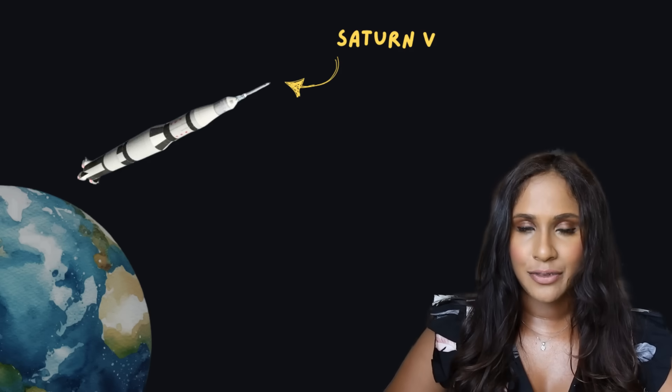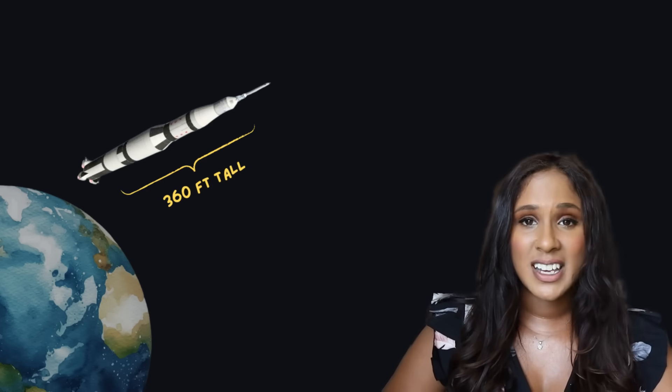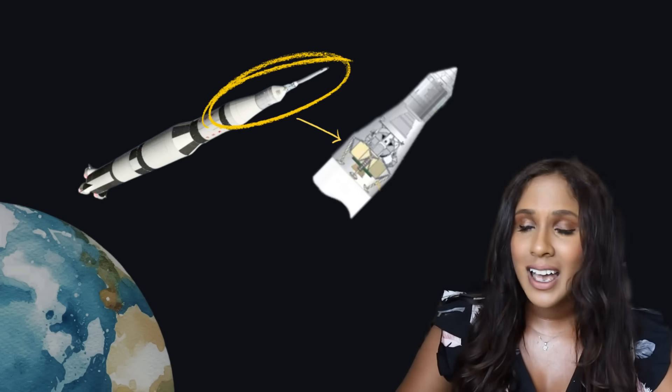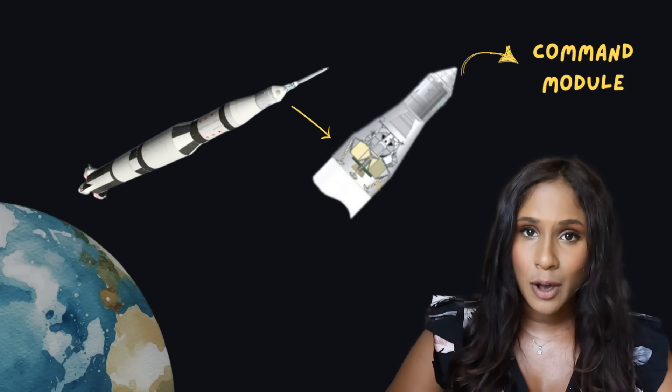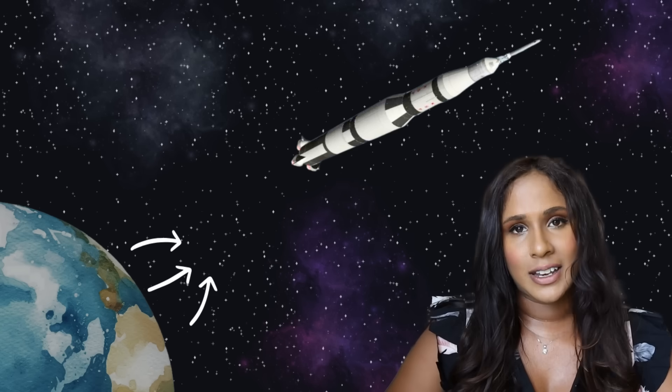The Apollo 11 mission was the first time humans landed on the moon. It happened on July 29th, 1969. The mission had a lot of moving parts. The Saturn V was a three-stage rocket that launched the Apollo 11 mission from Earth. Standing at over 360 feet tall, the Saturn V was designed to lift heavy loads into space, carrying the entire Apollo spacecraft — consisting of the command module and the lunar module — out of Earth's gravity and into space.